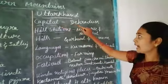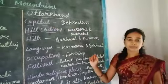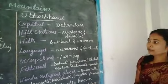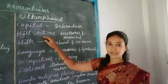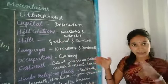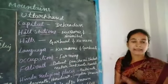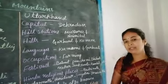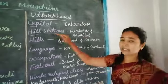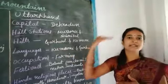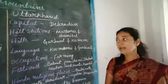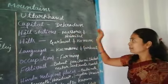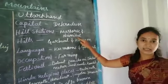The capital of Uttarakhand is Dehradun. Uttarakhand has hill stations, valleys, and mountains. The main hill stations are Mussoorie and Nainital.